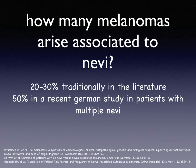How many melanomas arise associated to nevi? Traditionally, in the literature, we find that 20-30% of melanomas arise in association to nevi. These are a series of retrospective histopathologic studies. However, a recent German study conducted prospectively in patients with multiple nevi indicated that 50% of melanomas in this particular setting of patients were arising in association to nevi.